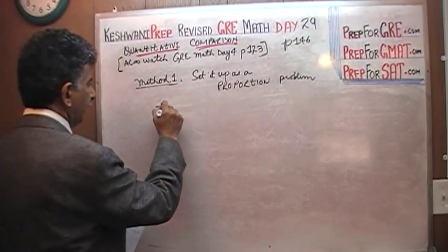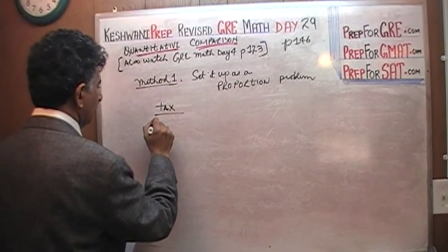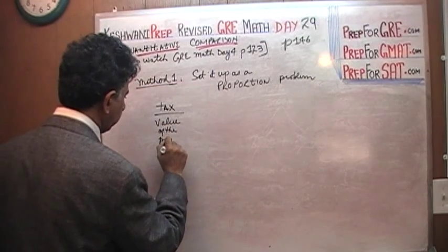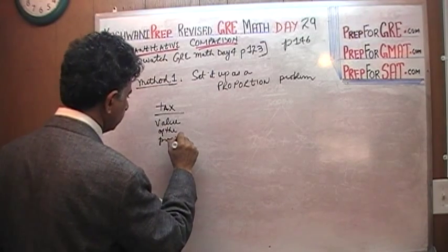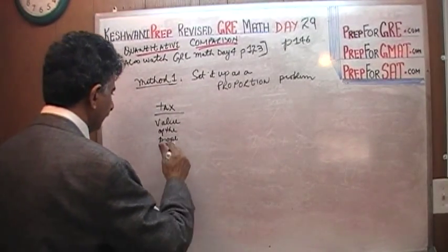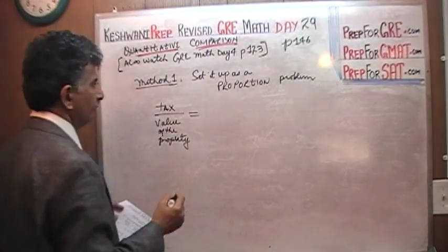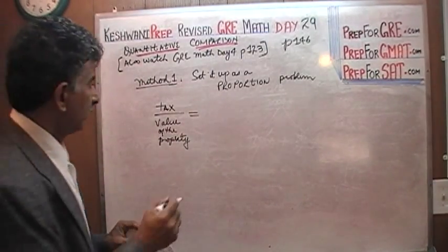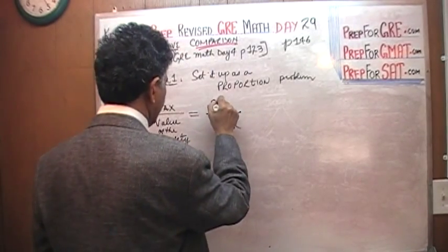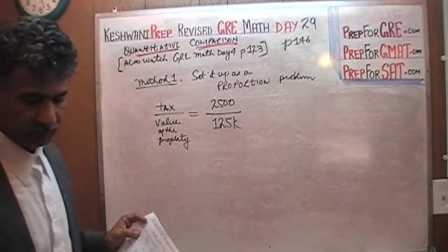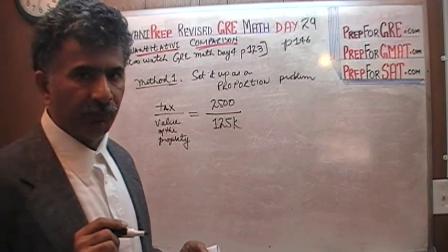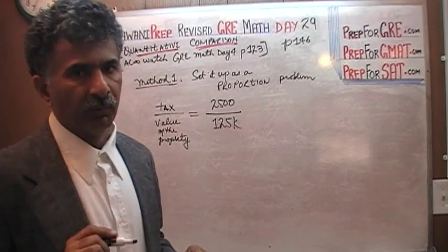So we have a tax and we have the value of the property. So we are told that the tax, we are told that the tax on 125,000 is 2500. We are told that, it is given to us. If you read the problem, which is why I told you, turn to page number 146, read the problem yourself and follow the work. You must have the book in front of you.